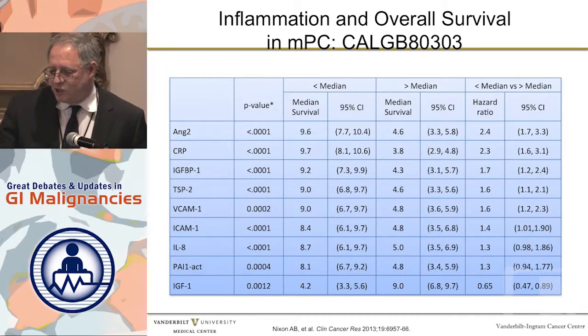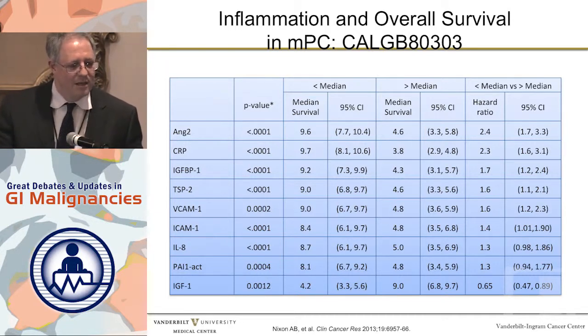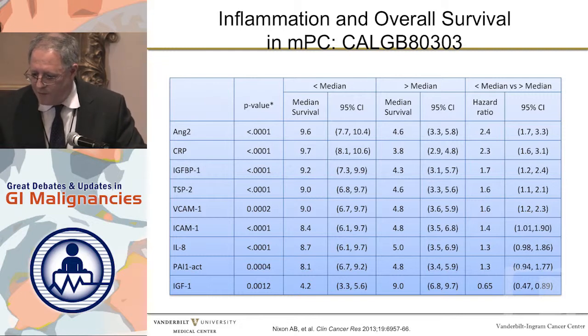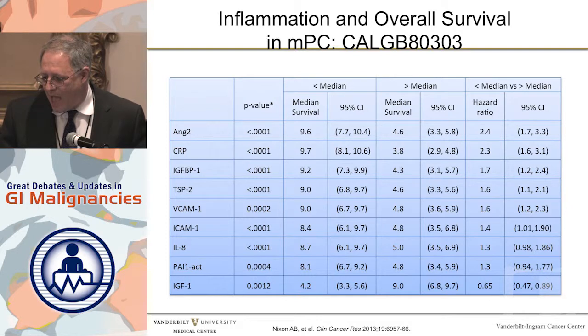One of the nicest things about CLGB80303 were the ancillary studies that were done off of it. One of the things we learned was that pancreas cancer has a boatload of chemokines and cytokines that are produced that actually have an effect on survival, or at least seem to predict worse survival — or, in the case of one anti-cachexia cytokine, a better survival. So possibly part of the reason our patients are dying is because they have an inflammatory milieu in their bodies and they are sick.